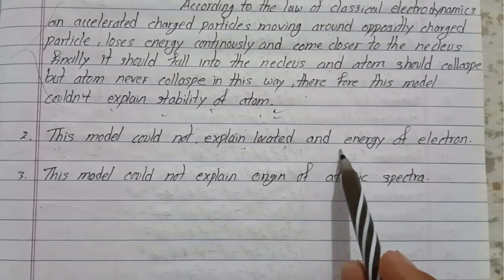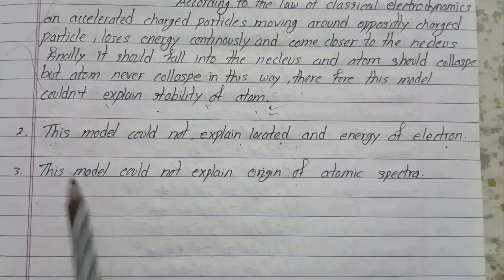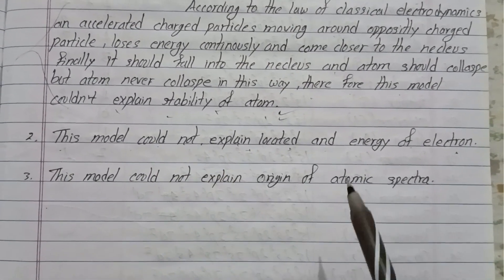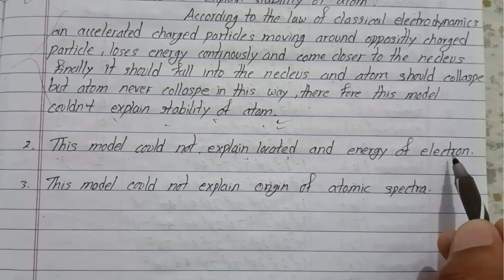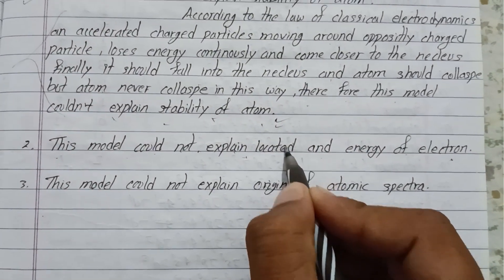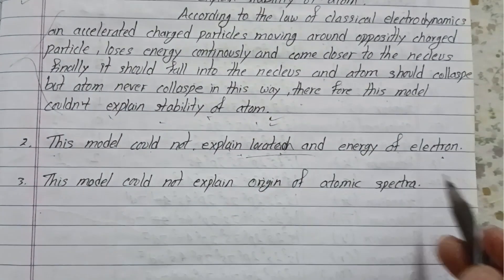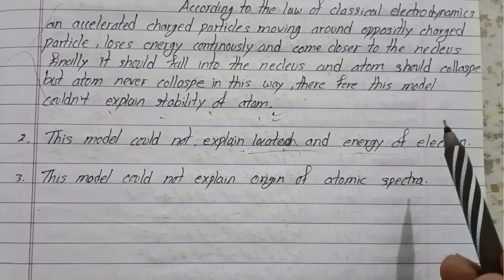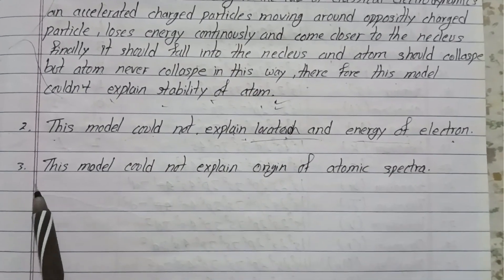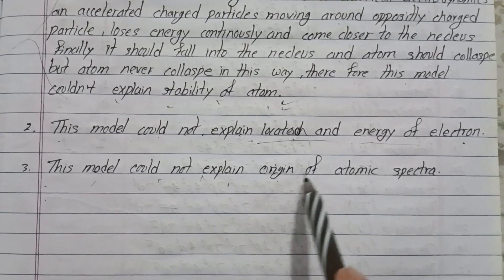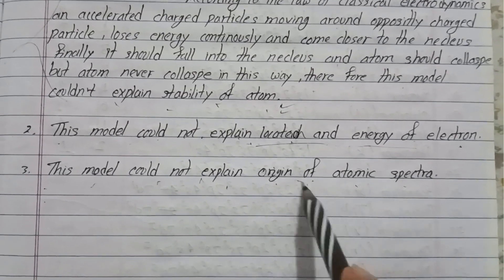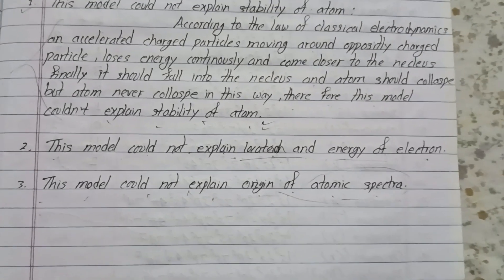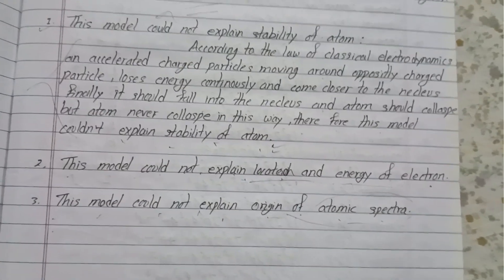This model could not explain the location and energy of electrons. Another drawback is that this model could not explain the origin of atomic spectrum.